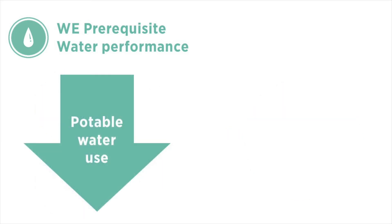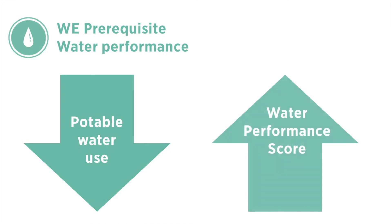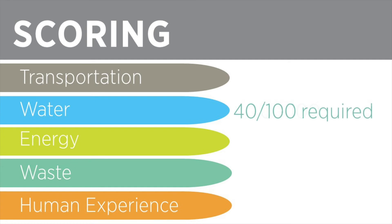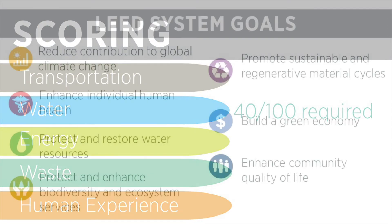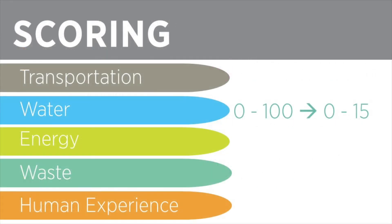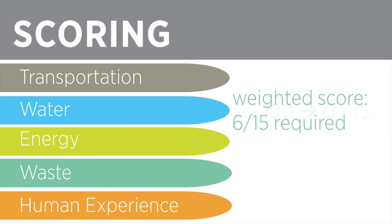As you would expect, lower potable water use results in a higher water performance score. Projects earn a 0 to 100 score to give an easy-to-understand snapshot of how the building is performing. To achieve certification, projects must earn a score of at least 40 out of 100 in each category, including water. These 0 to 100 scores for each category are then weighted to reflect the contribution each category makes to LEED system goals. The 0 to 100 water performance score is weighted out of 15, so the required 40 out of 100 score corresponds to at least 6 points.